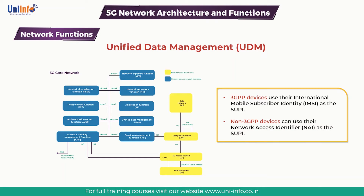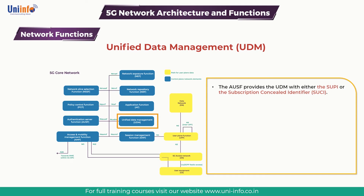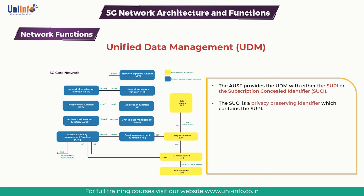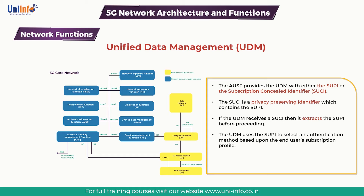Non-3GPP devices can use their Network Access Identifier as the SUPI. The UDM interacts with the AUSF during the authentication procedure. The AUSF provides the UDM with either the SUPI or the Subscription Concealed Identifier. The SUCI is a Privacy Preserving Identifier which contains the SUPI. If the UDM receives a SUCI then it extracts the SUPI before proceeding. The UDM uses the SUPI to select an authentication method based upon the end-user subscription profile.